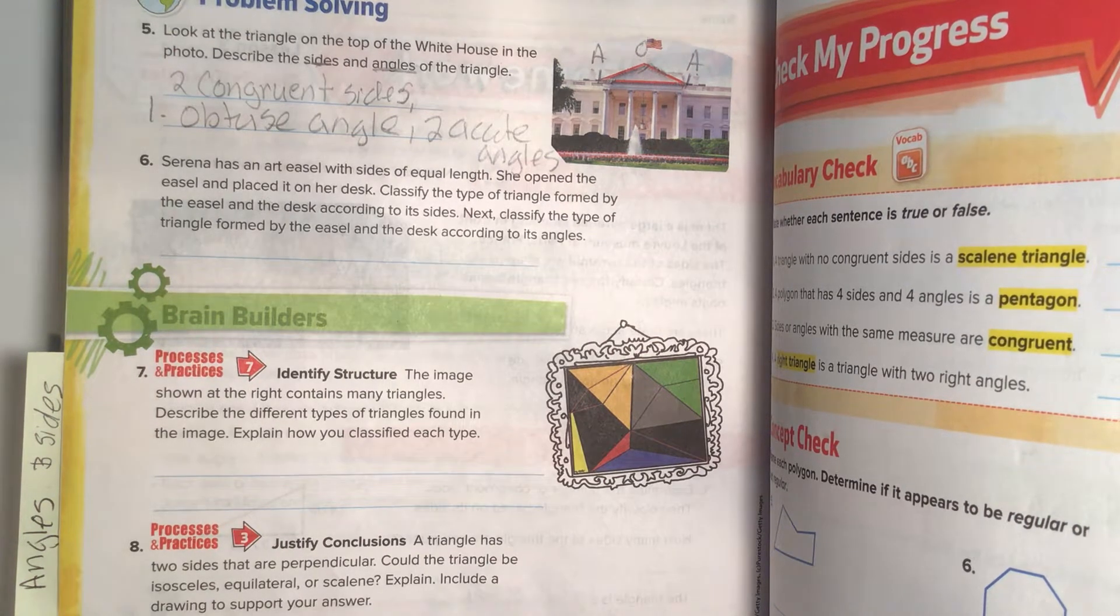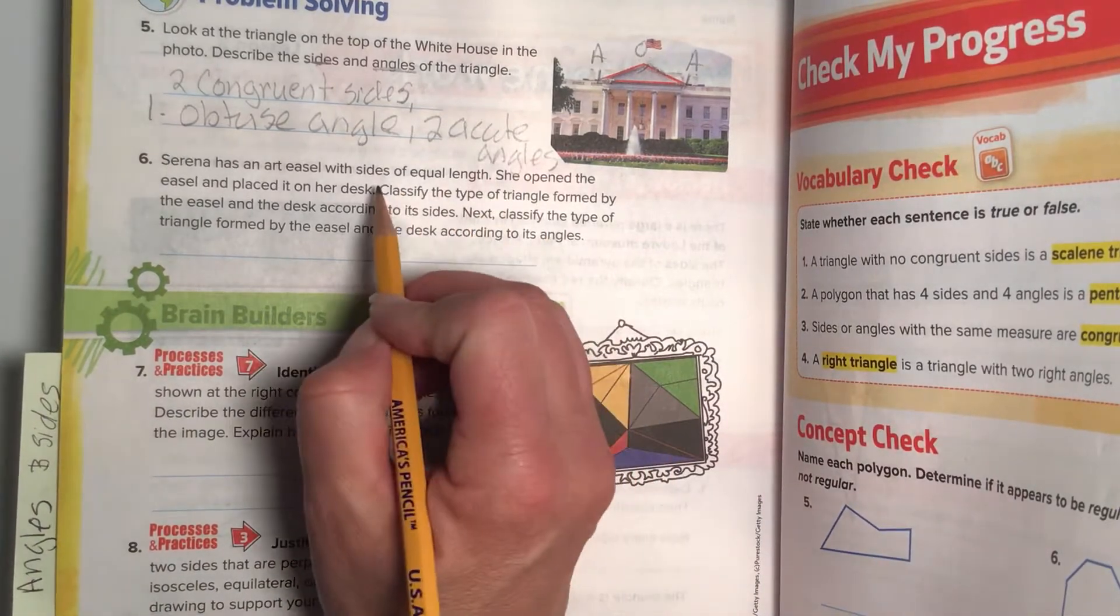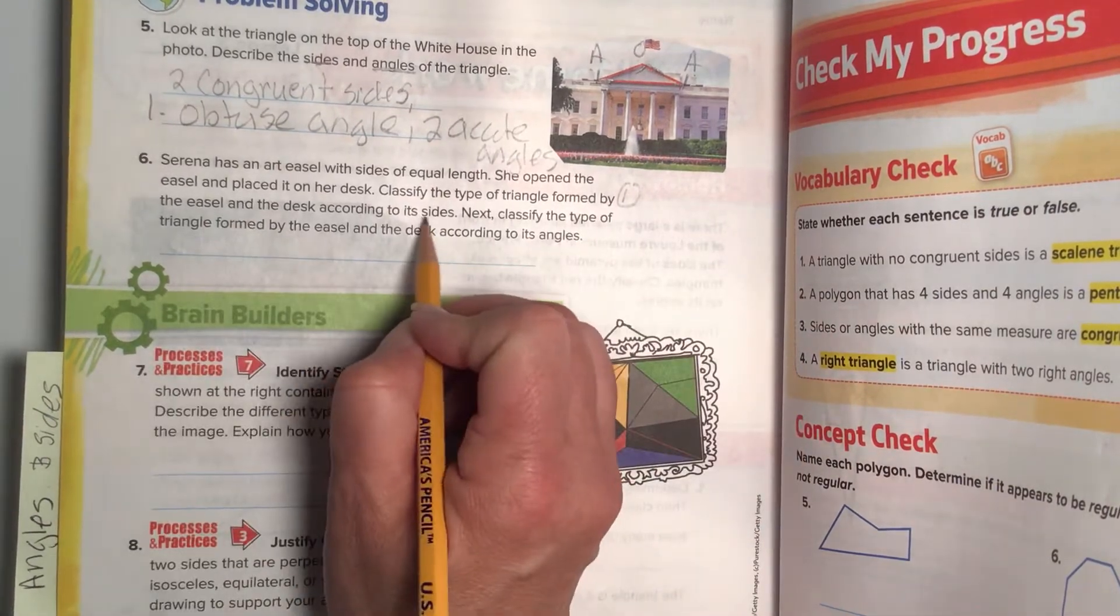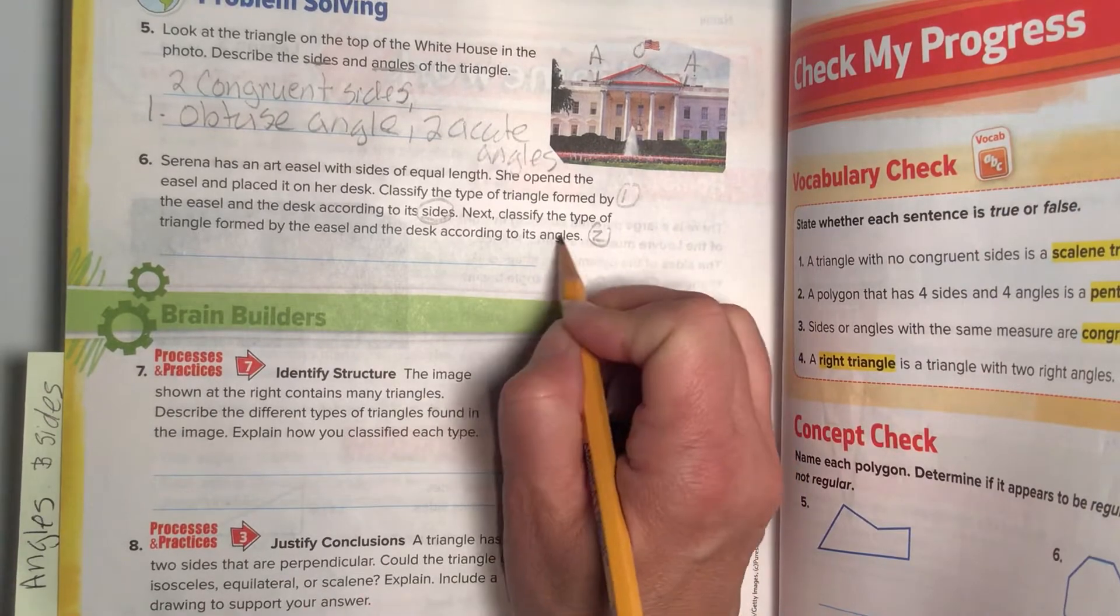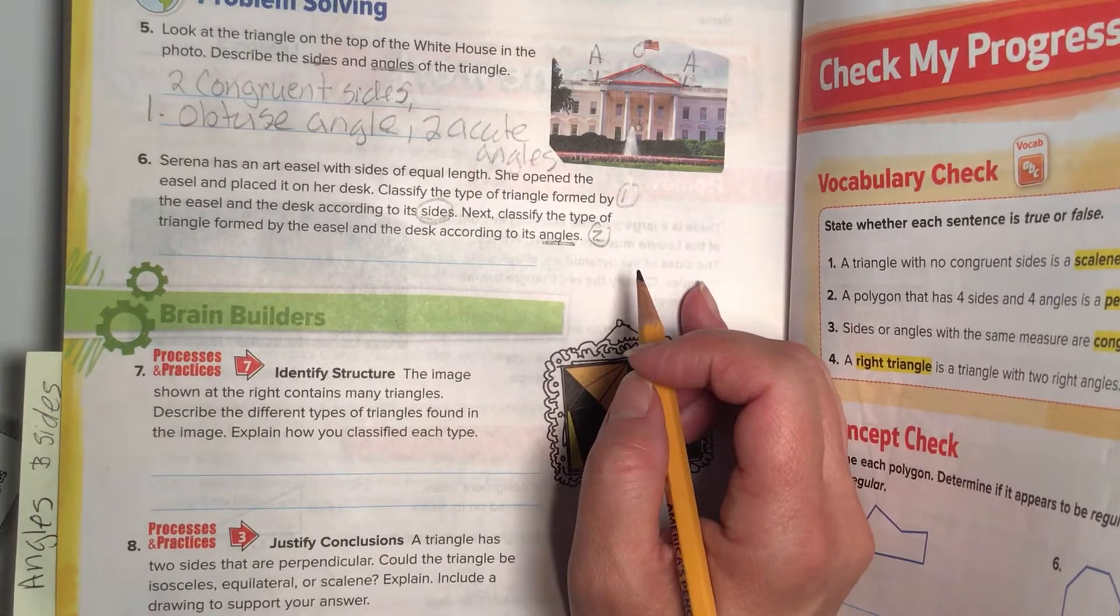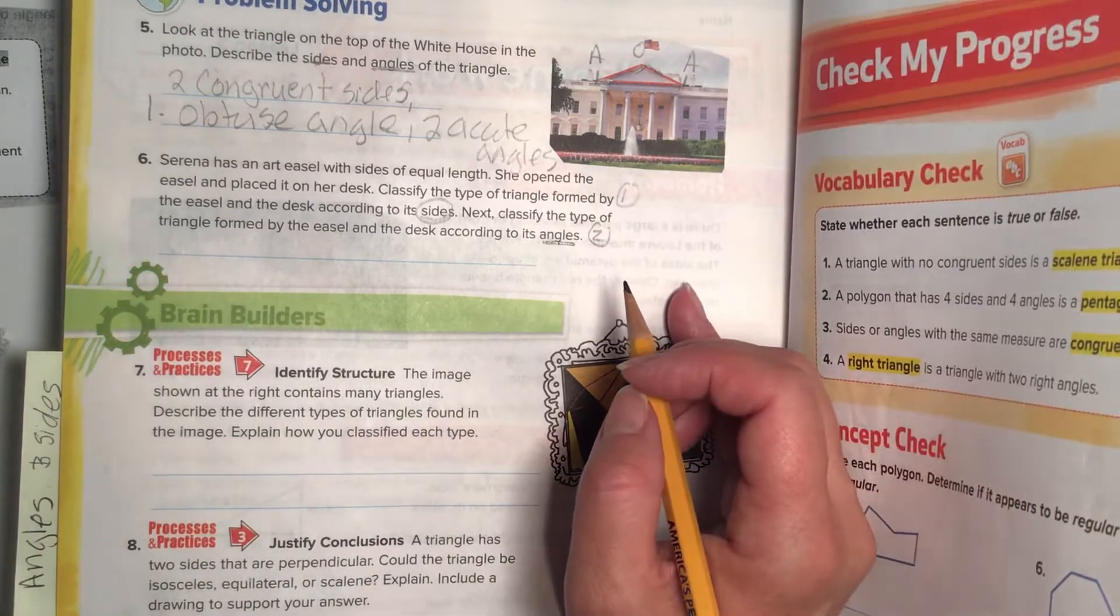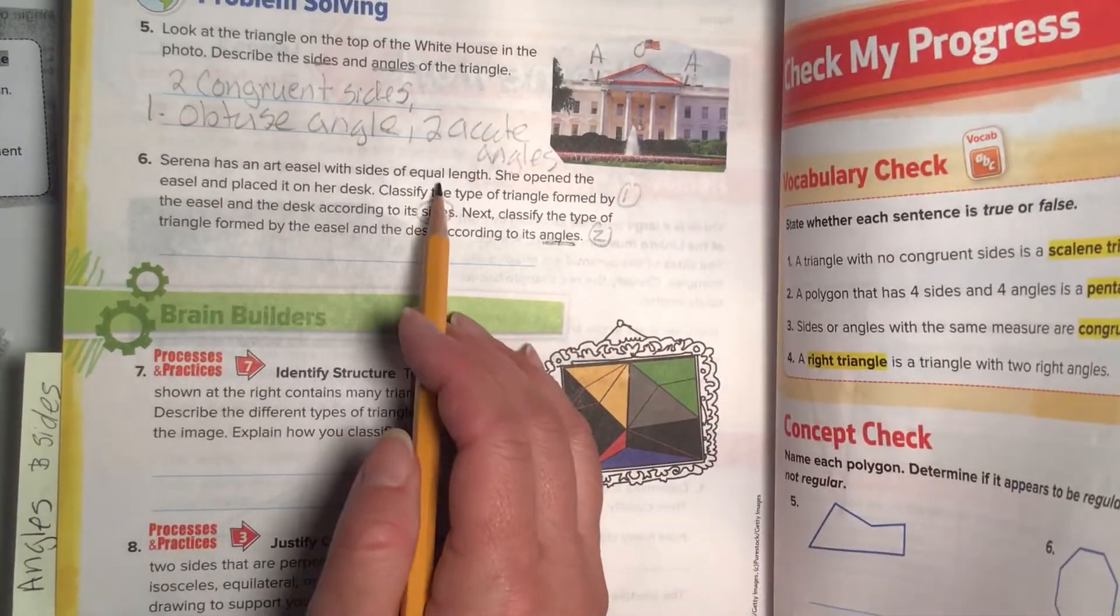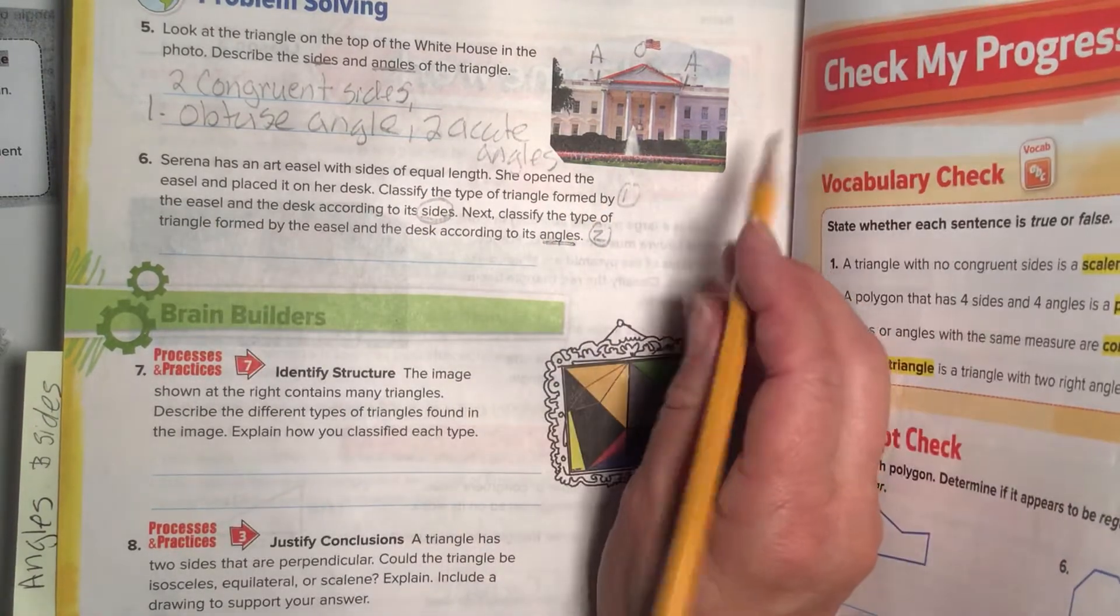Next, classify the triangle formed by the easel and its desk according to its angles. Okay, so first they want us to classify it by its sides. And then next they want us to classify it by its angles. Okay, we can do this. So let's pull out our little handy dandy things again. We have an interesting little picture here. She has an art easel with equal length of sides. She opens the art easel and places it on her desk.